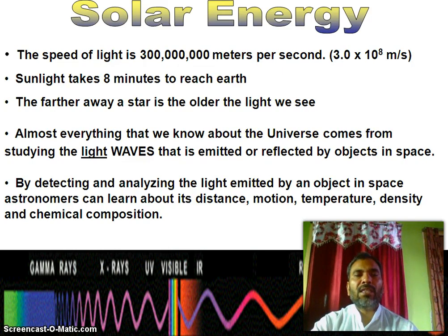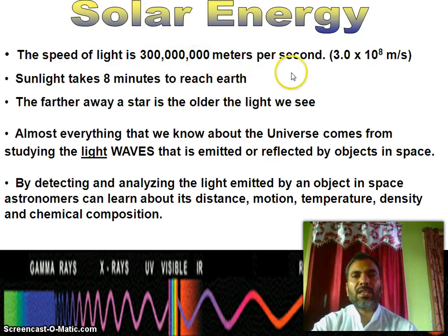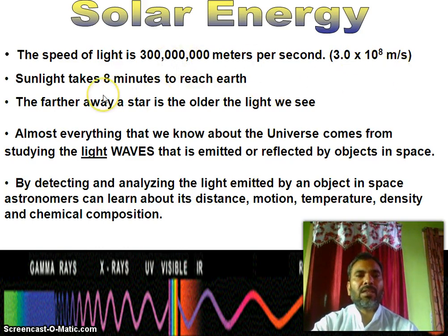The speed of light is 3.0 × 10⁸ meters per second. Sunlight takes 8 minutes to reach Earth. The farther away a star is, the older the light we see.